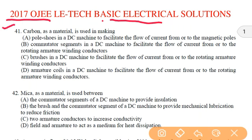So first question, carbon as a material is used in making. We know that carbon is a conducting material so it will always lead to collect the currents in the generator or provide the current to the motor. So we know that in the construction, the carbon is used as brushes in a DC machine to facilitate the flow of current from or to the rotating armature winding conductors. In generators we collect the current through the brushes and in motor we provide the current through the brushes. So carbon is a material which is used as brushes in the DC machine.